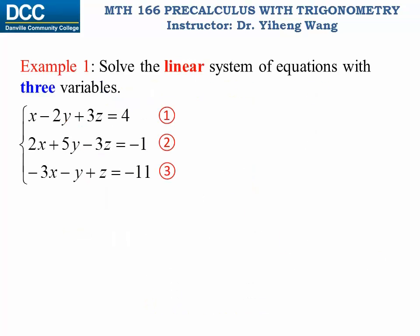Let's look at this example. Previously we learned how to solve this system of linear equations using the Gaussian elimination method. But did you notice that we were only manipulating the coefficients of the system, and we were simply carrying the variables x, y, and z over and over every time we rewrite the system. So is that necessary? Why don't we just forget about the variables for now, and only work on the coefficients, and hopefully this way our calculation will be more efficient.